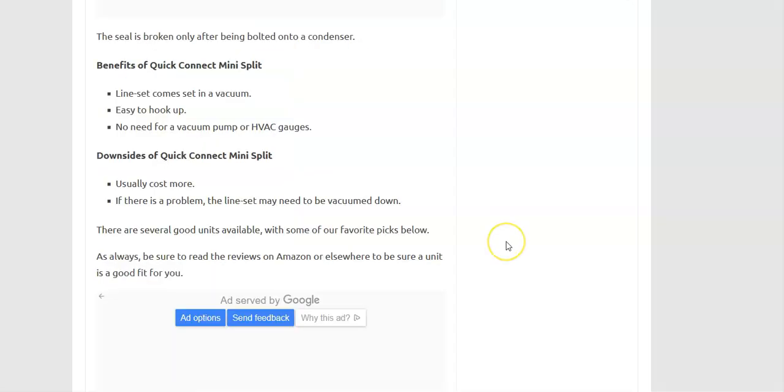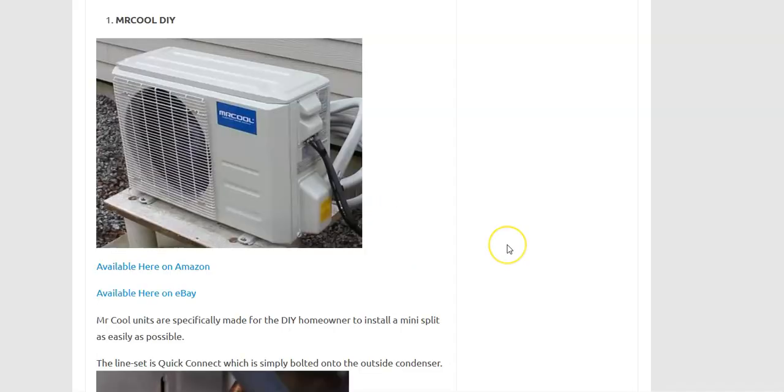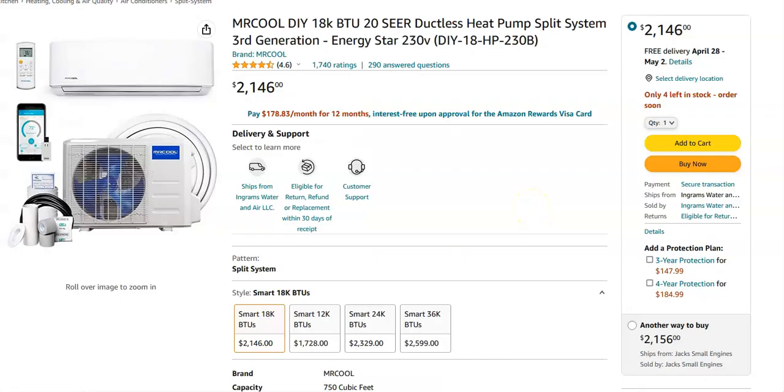The only downside to these quick connect mini split systems is that they usually cost more compared to other units. If that's an issue, you might want to look at the other option. For example, one of the more popular quick connect mini split systems is the Mr. Cool units. These are very popular with DIY homeowners, and these units work very well when installed. I've installed a few of these and they're still working really good.